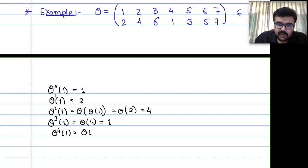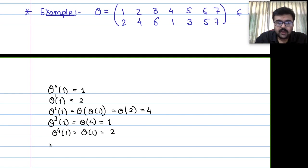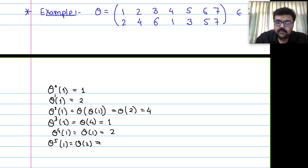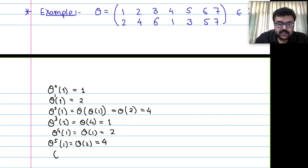Theta^4(1) = theta(1) = 2 again. Theta^5(1) = theta(2) = 4. Theta^6(1) = theta(4) = 1 again. So theta^3 sends 1 to 1, theta^6 also sends 1 to 1, and this repeats. It is cycling 1, 2, 4, 1, 2, 4, continuously.